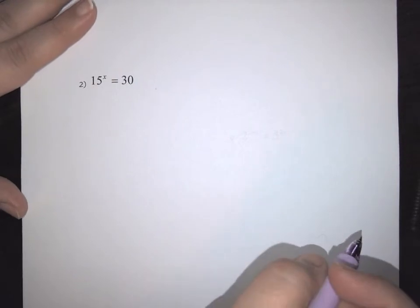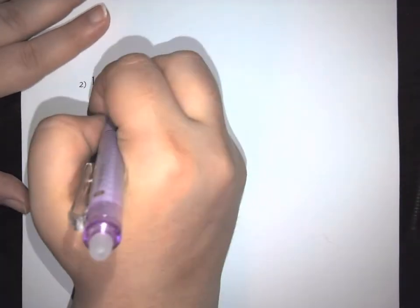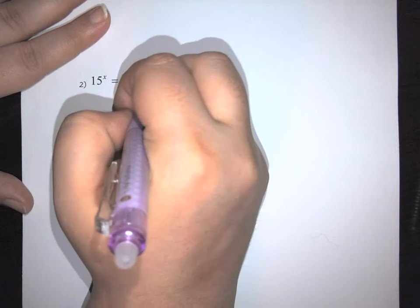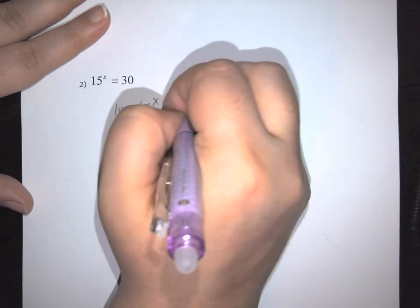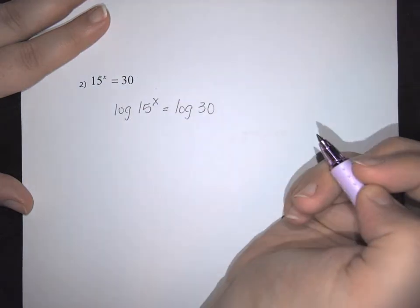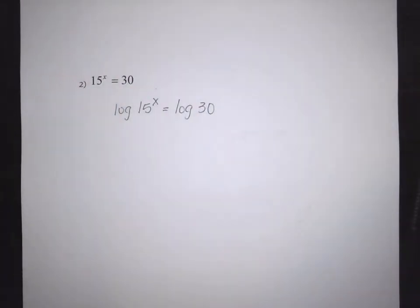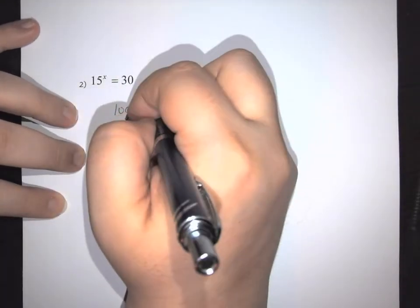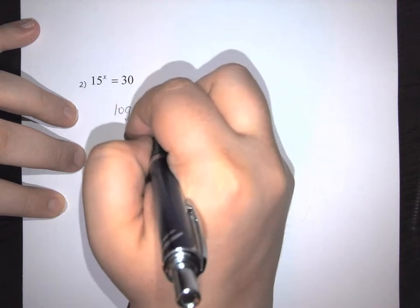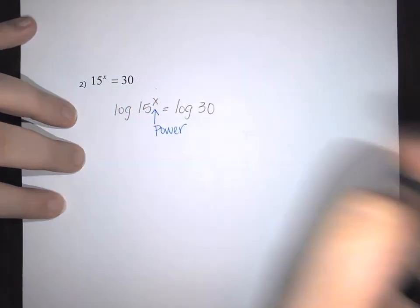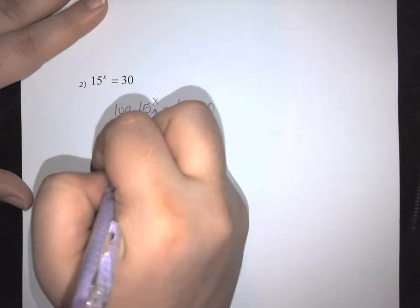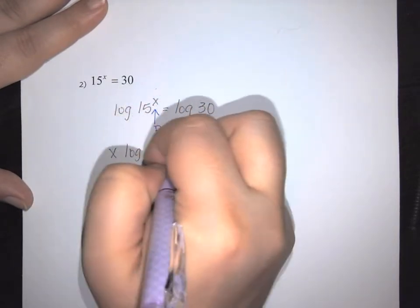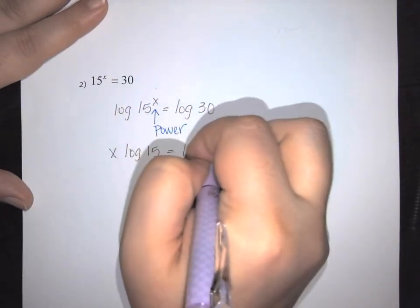Because of that, we have to use the log properties. The first thing we're going to do is take each side and raise it to the log, then follow the properties — specifically the power rule, which brings the exponent down in front. This becomes x times log of 15 equals log of 30.